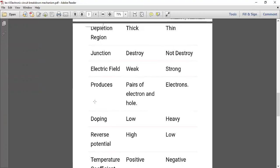Doping - doping means impurity factor we are adding. Avalanche has a very low impurity factor, and zener has very heavy impurity factor added. Reverse potential: avalanche has very high reverse potential, and zener has very low reverse potential.